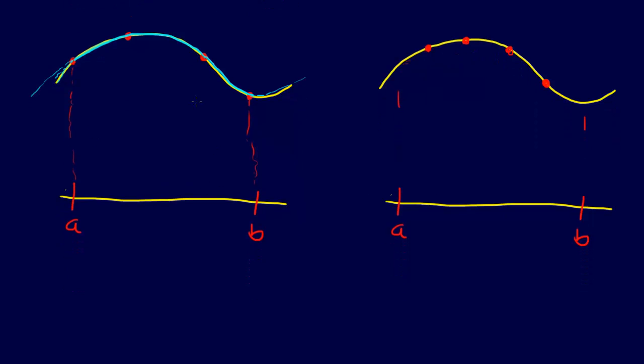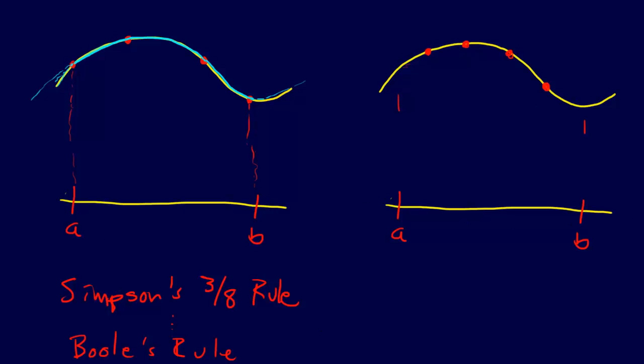If we're doing four points, this is called Simpson's three-eighths rule. We can go on and use more points if we want. The higher order ones - the fourth order one is called Boole's rule. It goes on, but we're not going to go beyond that.